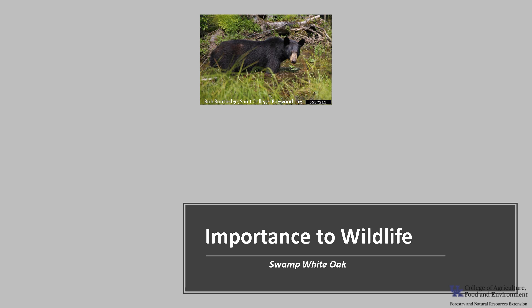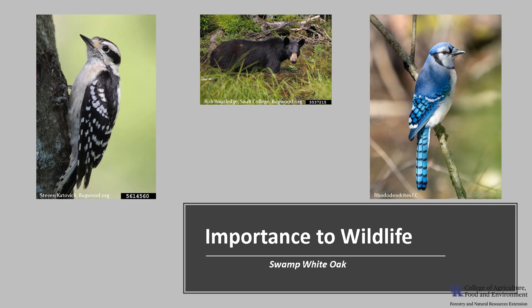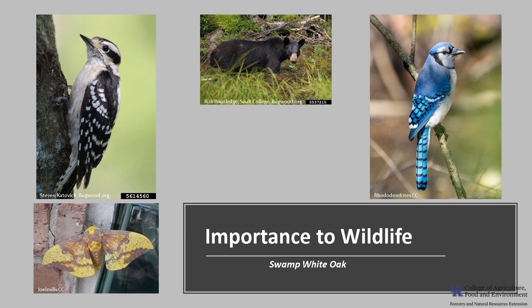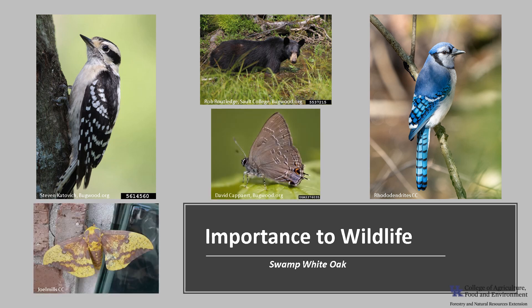Swamp White Oak, like other oaks, is an important tree species for wildlife. Oaks are one of the top 10 trees for wildlife according to the National Wildlife Federation. Squirrel, bear, and white-tailed deer eat the Swamp White Oak acorns. Varieties of birds also rely on the acorns, including ducks, geese, woodpeckers, wild turkey, and blue jays. Oaks also support a wide variety of Lepidopteran larval species, including the imperial moth, hairstreaks, and duskywings.